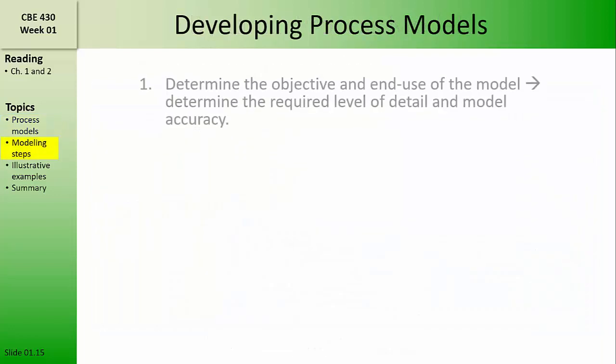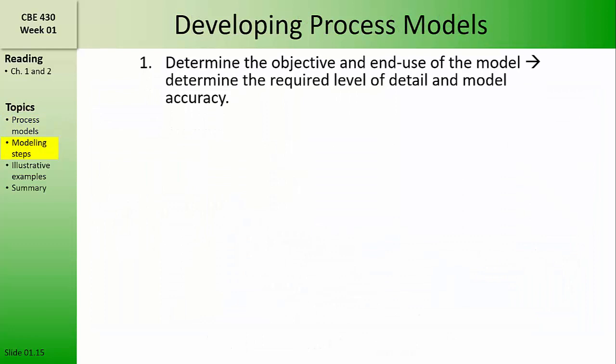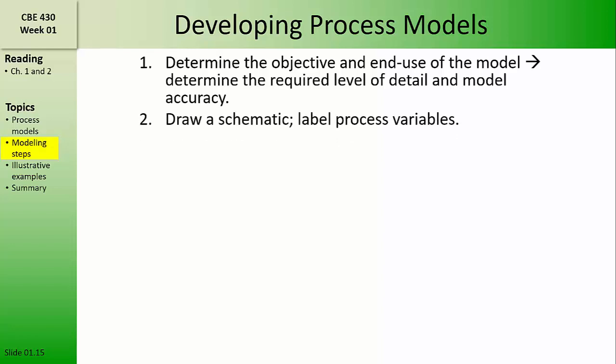When developing process models, the first step is to determine the objective and the end use of the model. That is, what is the required level of accuracy and detail in the model? What kinds of questions do we want the model to be able to answer? What sorts of predictions should the model make?